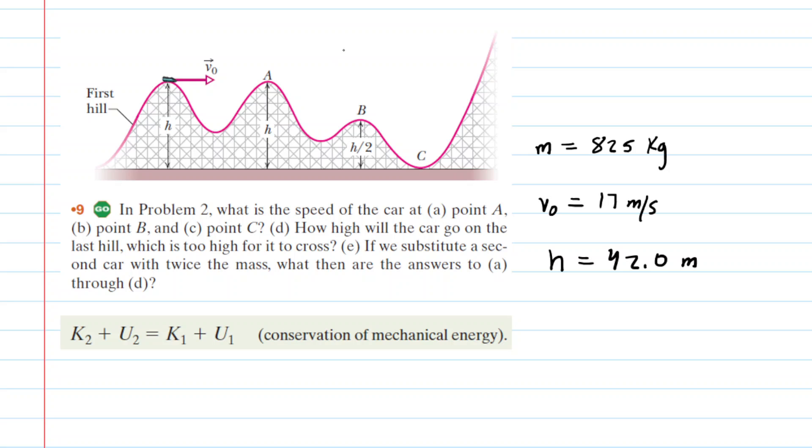In this question, we need to calculate the speed of the roller coaster car at points A, B, and C. Now in a previous question, we learned the mass and the initial speed as well as the initial height of the car. The car starts right over here. We're going to call that position, position number one.